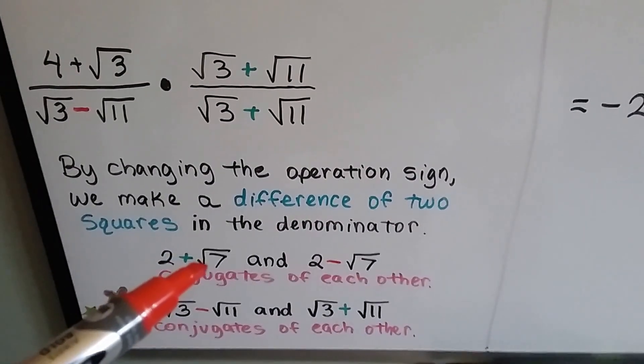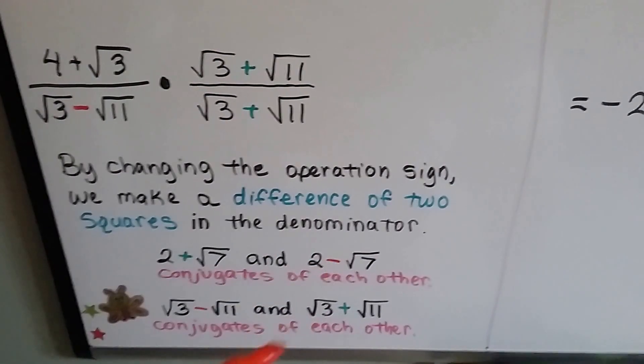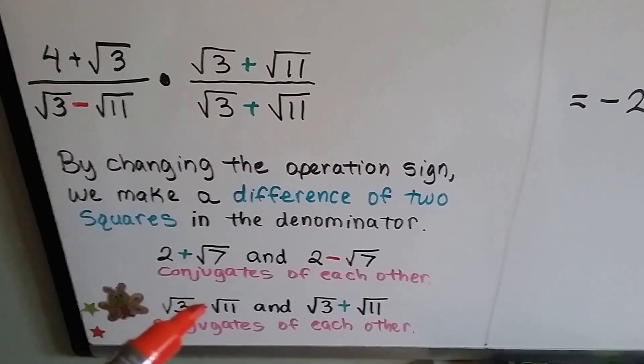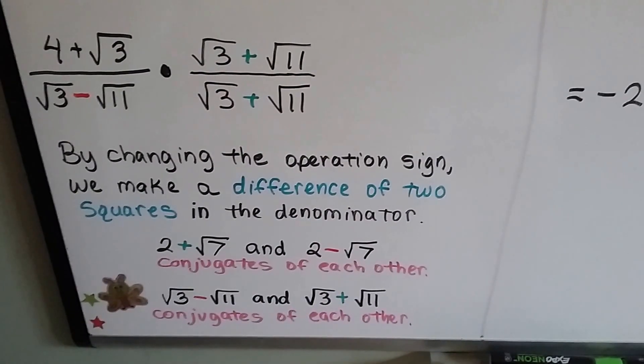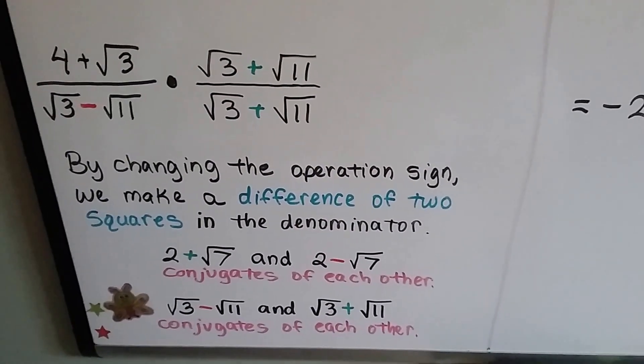The 2 plus the square root of 7 and the 2 minus the square root of 7 are conjugates of each other. The square root of 3 minus the square root of 11 and the square root of 3 plus the square root of 11 are conjugates of each other. So that's a conjugate.